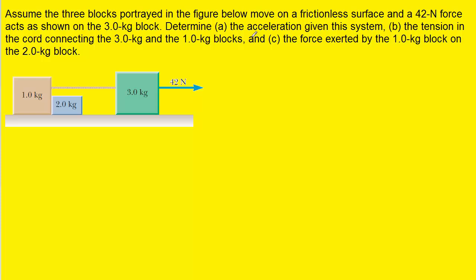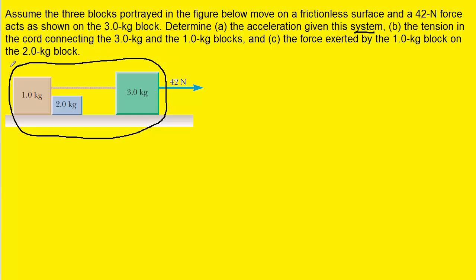In Part A, we are asked to determine the acceleration of the system, and the key word in that question is 'system.' We can define our system in many different ways, but the most convenient way in this particular instance is to define the system as all three blocks together. In essence, the three blocks can be combined into a single block, and the mass of that single block would be the sum of the individual masses: one kilogram, two kilograms, and three kilograms gives us six kilograms for our system.